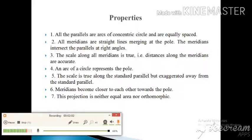Second number: All the meridians are straight lines merging at the poles. The meridians intersect the parallels at right angles. Third number: The scale along all meridians is true. Distances along the meridians are accurate.